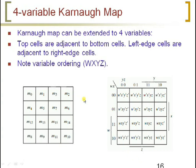Now, 4-variable K-map. With 4 variables, we can expect 16 combinations. The K-map can be extended to 4 variables. Top cells are adjacent to bottom cells, and left cells are adjacent to right edge cells. All top cells are adjacent to bottom cells, and all left cells are adjacent to right cells.